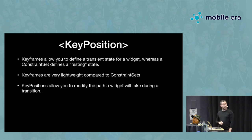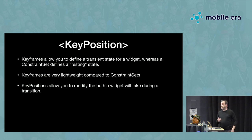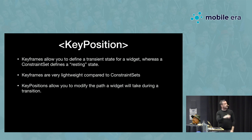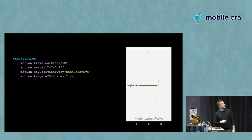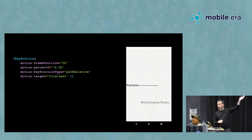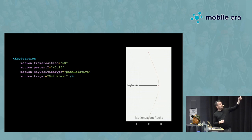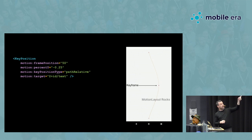There are two different types you can define in the motion scene. You can have a key position, which lets you change the path that the widget will take as it transitions from start to end. Keyframes are very lightweight — they're like a deviation between the start and end place. The constraints themselves are more like a resting state; a keyframe is just a diversion that modifies the path. So here we define a keyframe position at frame 50 — 50% through the animation — and we move the widget in %Y using a path-relative coordinate system.